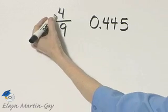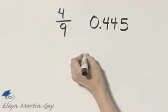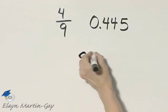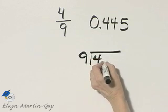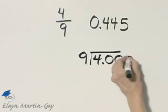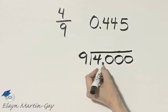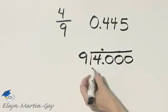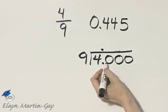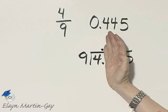So I'll divide 9 into 4. Let's divide 9 into 4, and I'll put a decimal point, and we'll see how many zeros we need. All right, there's the decimal point in the quotient. How many times does 9 divide into 4? That's 0 times.